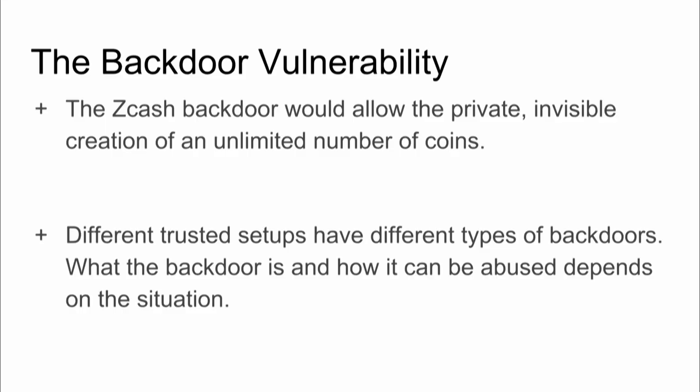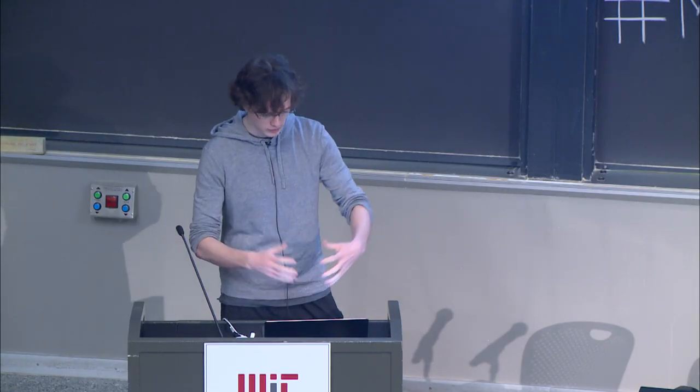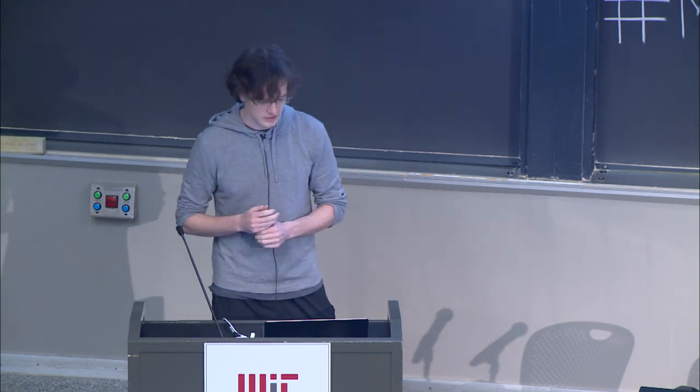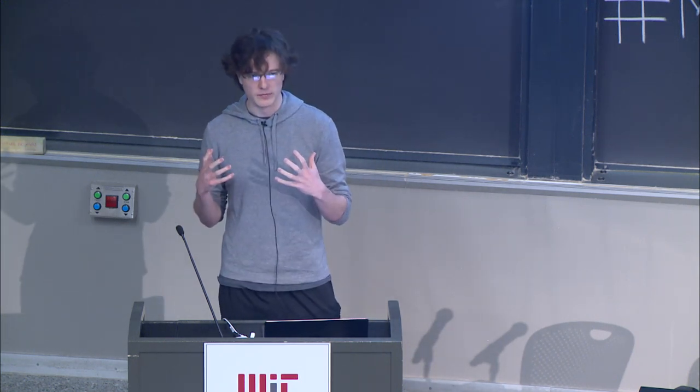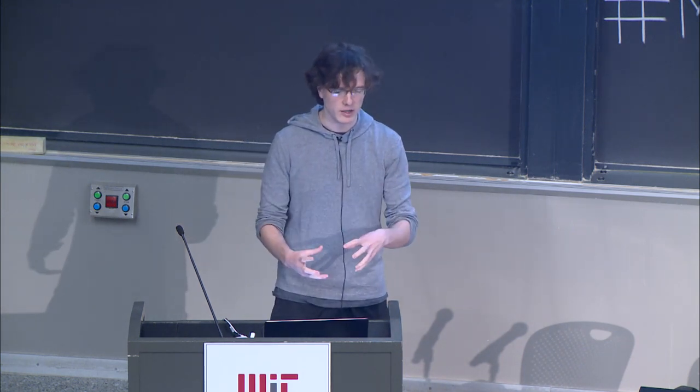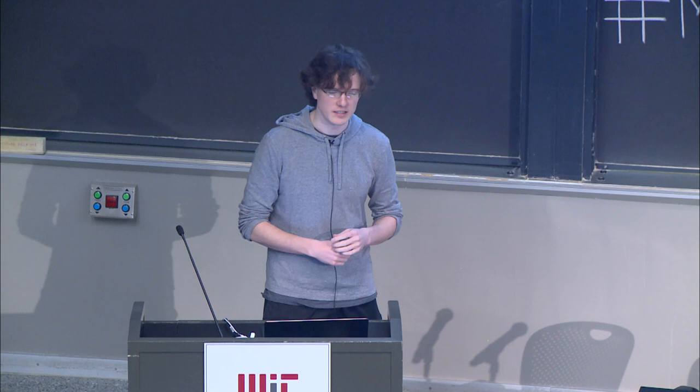If those six people had collaborated, created the backdoor, and stored it, the vulnerability is essentially that they can lie. They can create a transaction and prove they have valid coins coming from and going to valid places in a valid amount — but it's a lie. They can create a false proof and send themselves coins from nowhere, printing unlimited amounts of money. It's a pretty serious backdoor. We're just trusting that at least one of those six people did the trusted setup correctly, ran secure hardware, and successfully destroyed their backdoor.